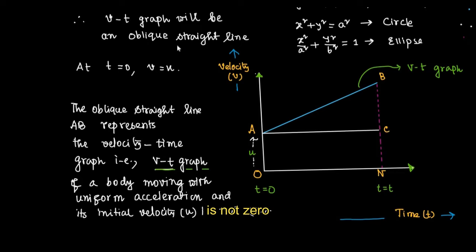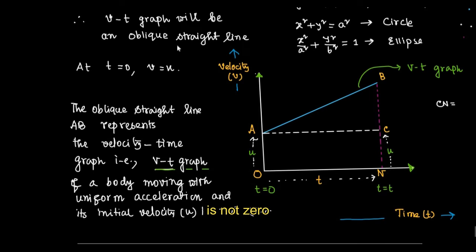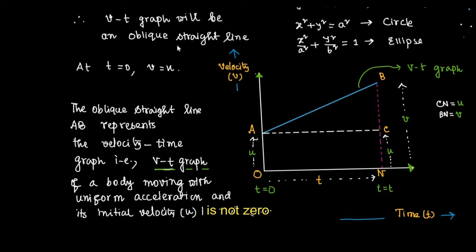A straight line AC is drawn from point A parallel to the time axis. The length ON = t, where t is the time interval in which velocity increases from u to v. On the graph, CN = u (opposite side of parallelogram ONCA), BN = v (final velocity), and CB = at.